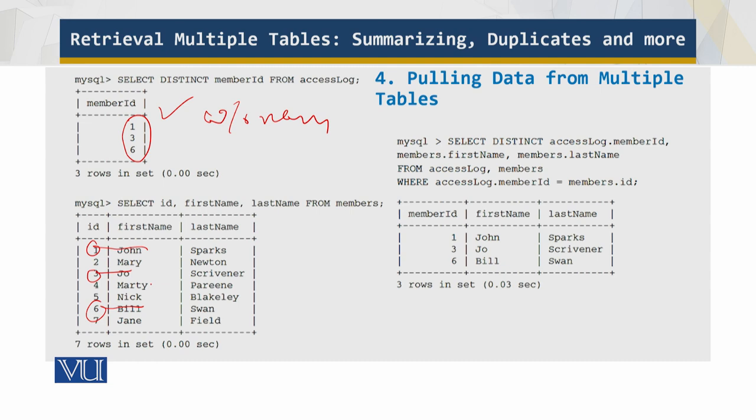But what about the accesses? Now you can see that member number 1 is in fact John Sparks, member 3 is whatever you can see, 6 is Bill Swan. However, by using a join, you can combine the data in both tables to retrieve not only the list of member IDs that have accessed the site, but their names as well, all this in a single query. So over here you have performed the join, and you have the names and access, everything already from the access log. So this is the power of the join. So that's all I have for this module for you.